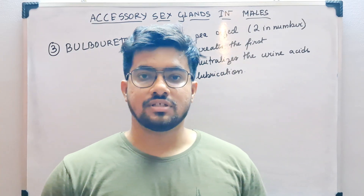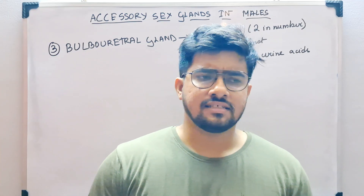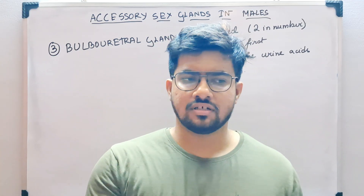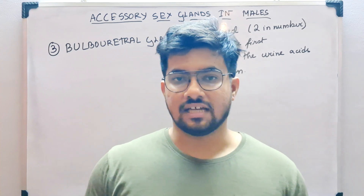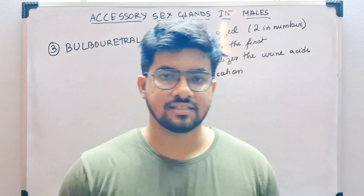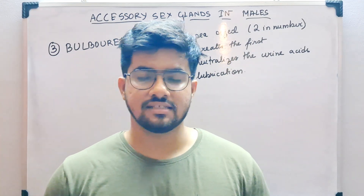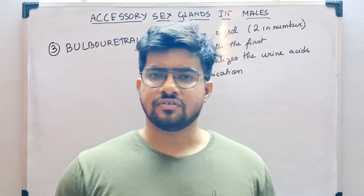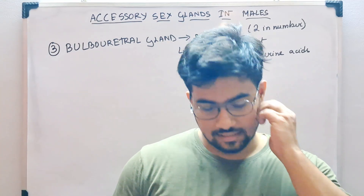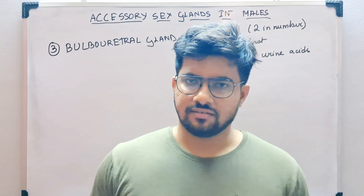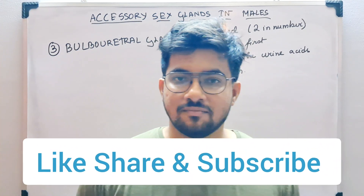To recap: the seminal vesicles secrete fructose and prostaglandins mainly for nutrition and contraction of the vaginal tract. The prostate gland secretions mainly contain lipids, proteins, citric acid, and bicarbonates, which help to increase the mobility of the sperms and also nourish them. Lastly, the Cowper's glands mainly help to neutralize the acids present in the urethra of the males and lubricate the tip of the penis and urethra before ejaculation.